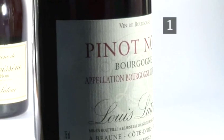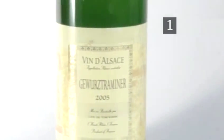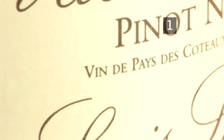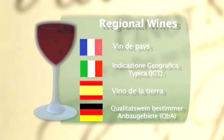The next step up is regional wine. This applies to wines made from grapes grown in a specific region, but that don't necessarily adhere to the specifications of that region's wine laws. In France it's called vin de pays, in Italy IGT, which stands for Indicazione Geografica Tipica, in Spain it's called vino de la tierra, and in Germany Qualitätswein bestimmter Anbaugebiete, or QbA.